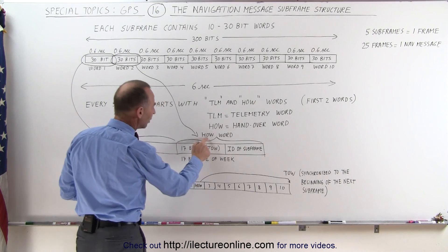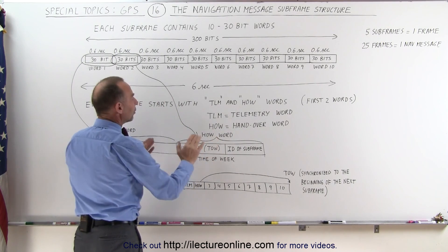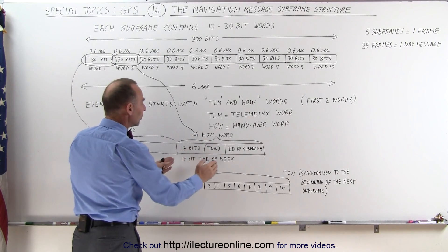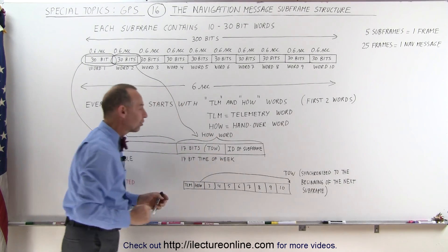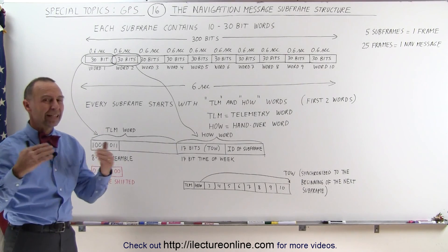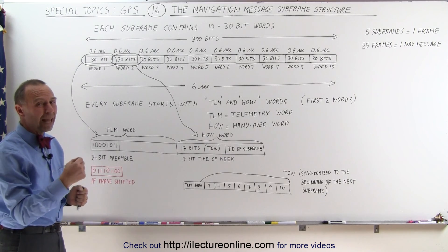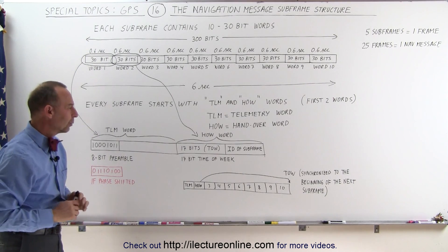The second word, the HOW word, or the hand-over word, contains the first 17 bits of the HOW word, contain the time of the week. That's why it's called the TOW for time of the week. We'll see later how that is structured. Each bit represents 1.5 seconds times 4, but we'll go to that later.